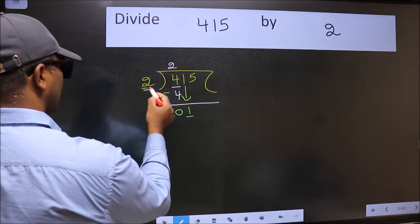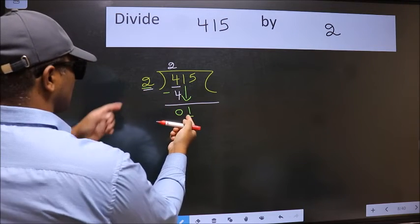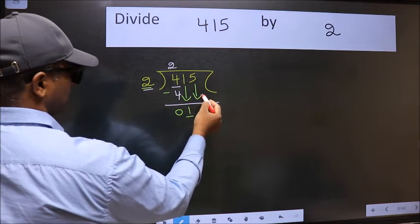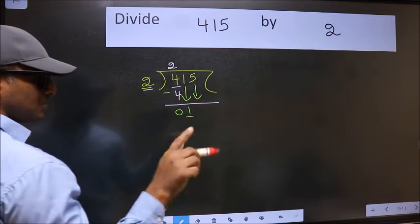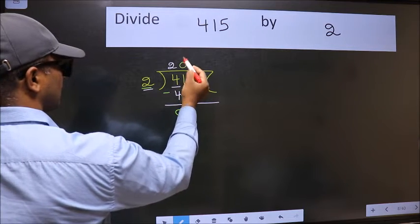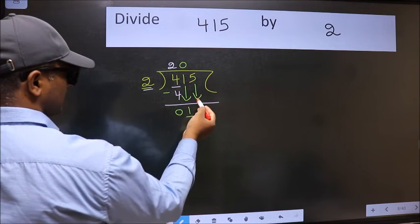Now here we have 1 and here 2. 1 is smaller than 2, so we should bring down the second number. And the rule to bring down the second number is we should put 0 here. Then only we can bring this number down.